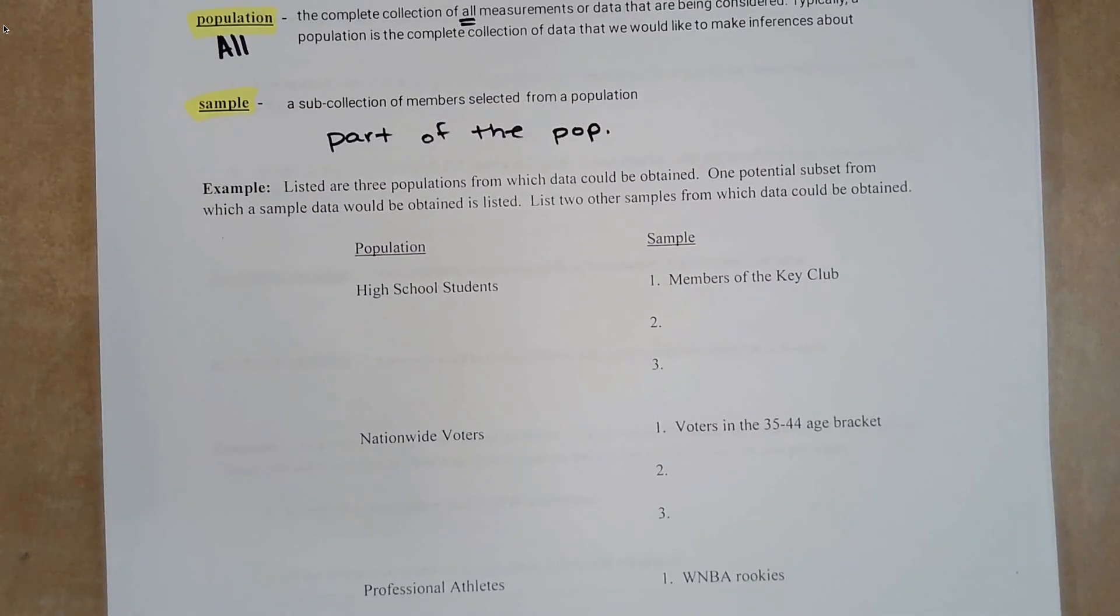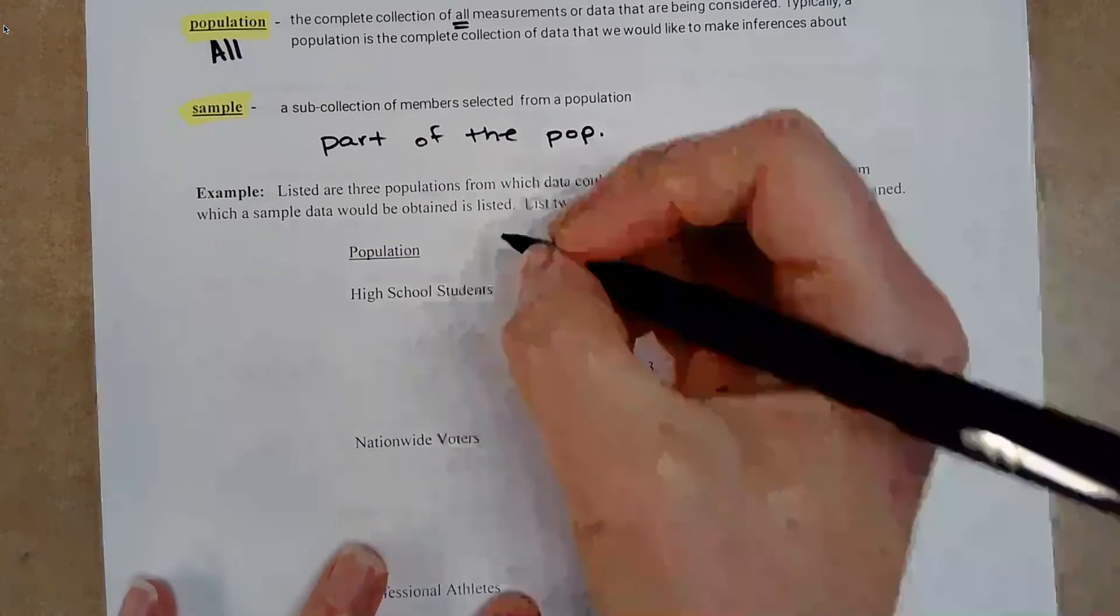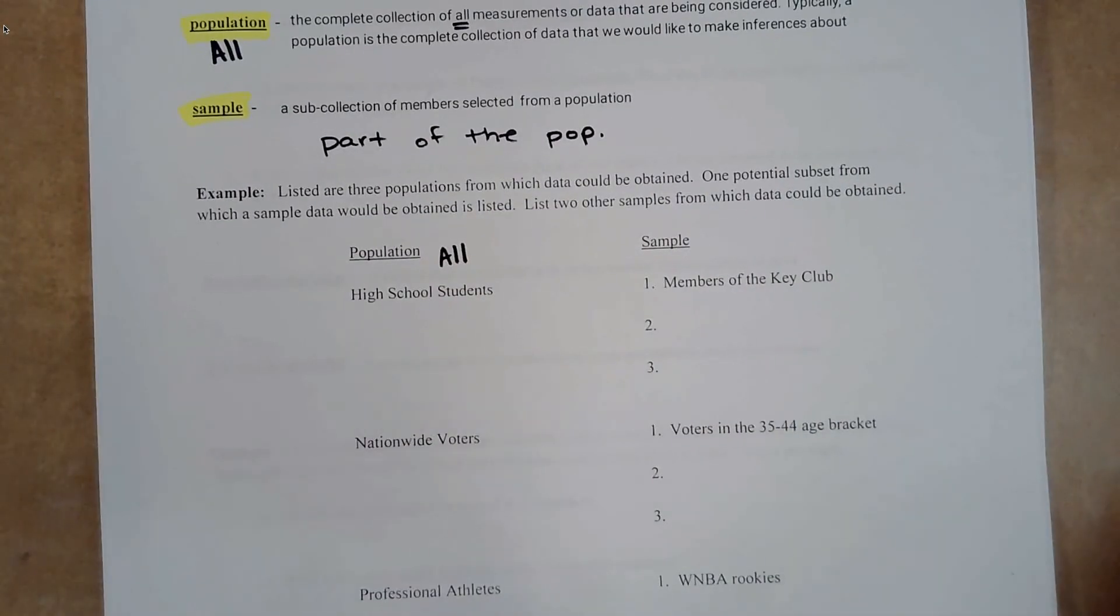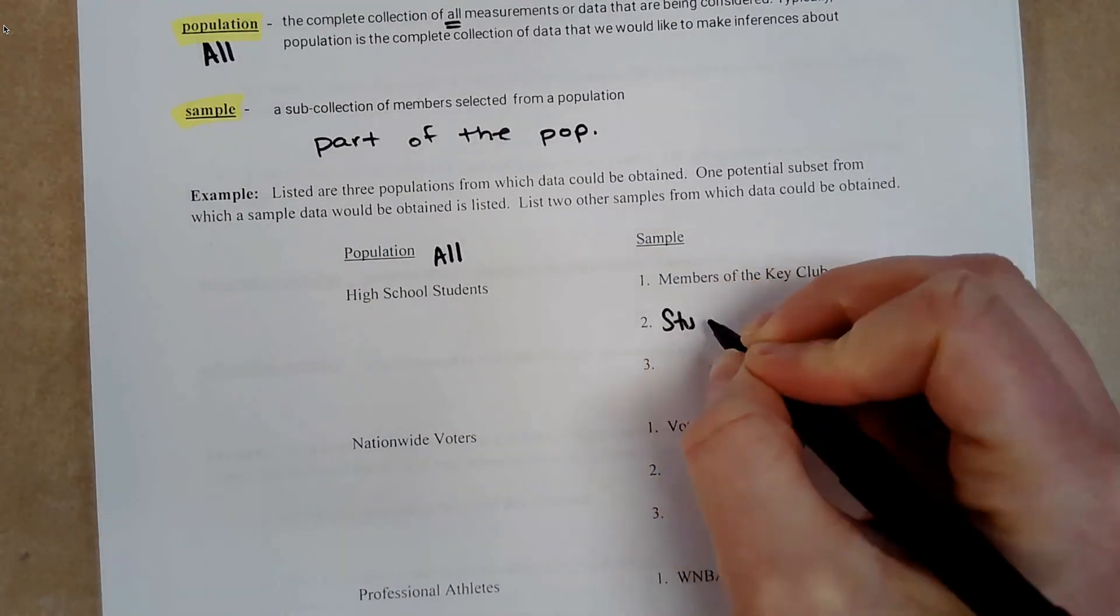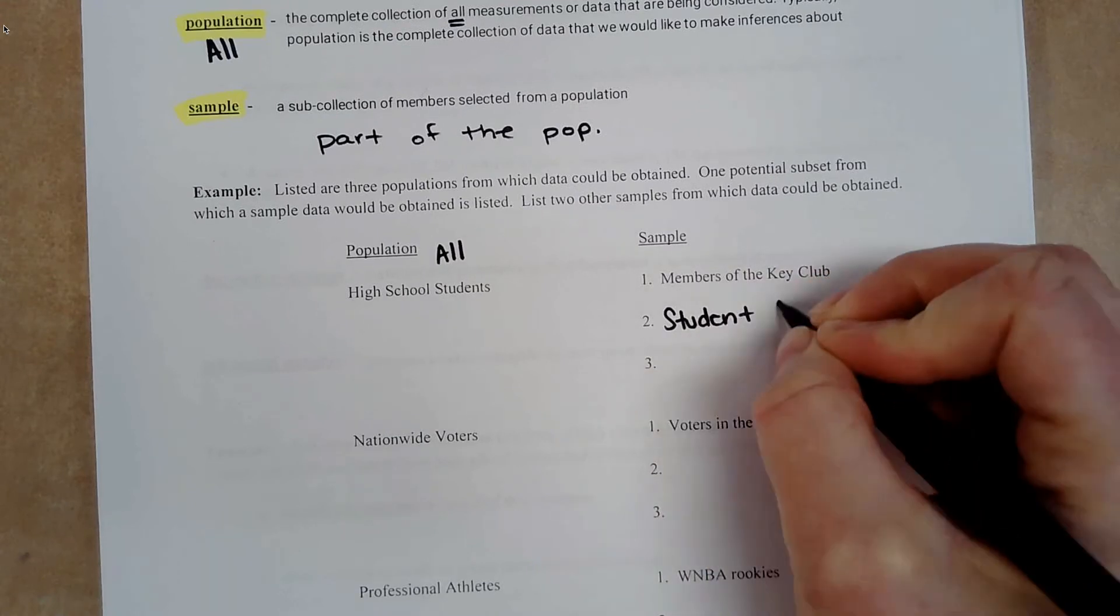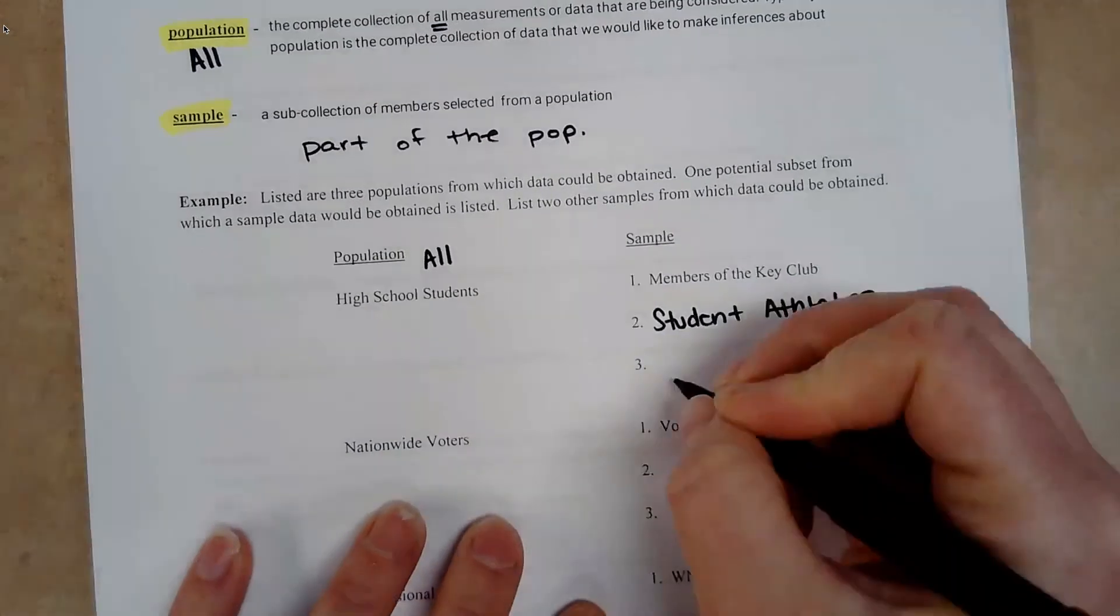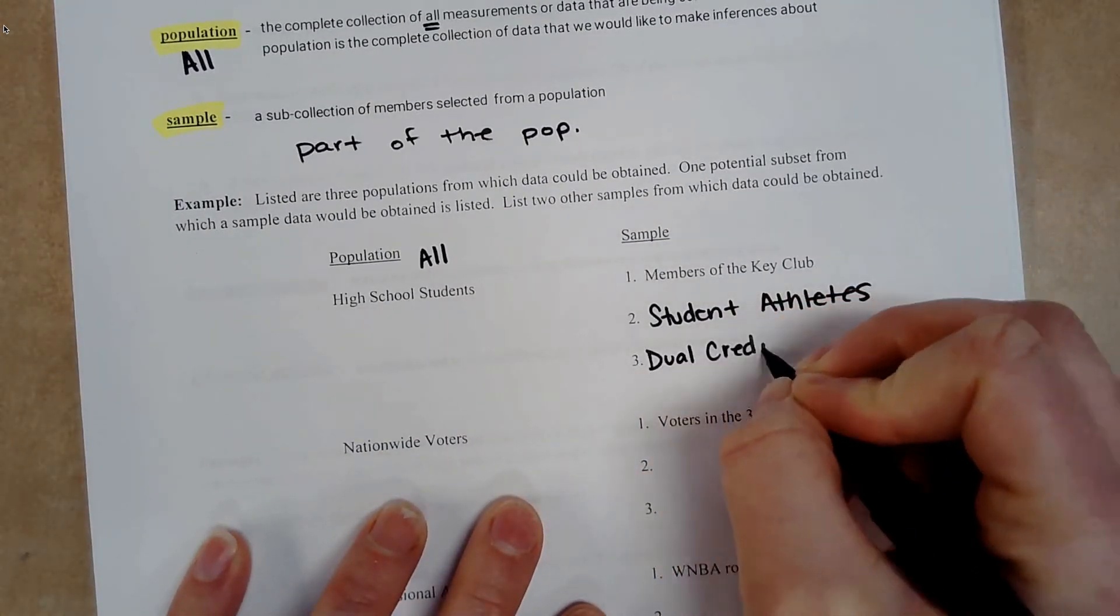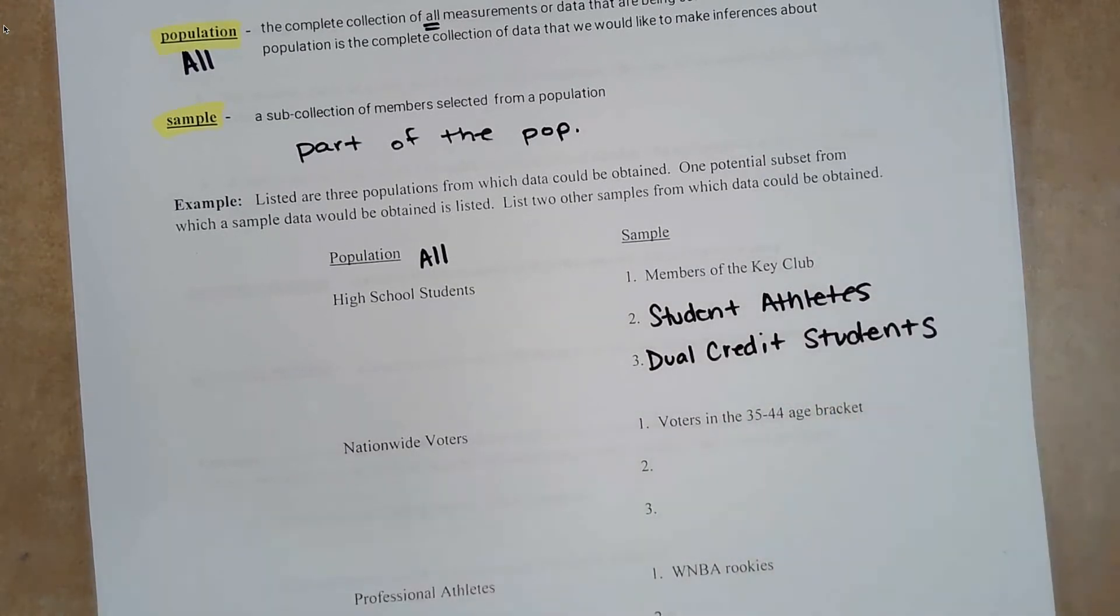Out of the high school students, we can take samples. So let's say members of the key club, a certain kind of club. So population is all high school students. And from that, we are going to take a sample. So let's say student-athletes. We could also include dual credit students, et cetera.